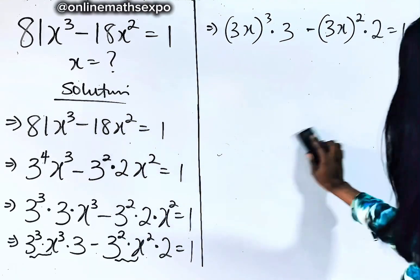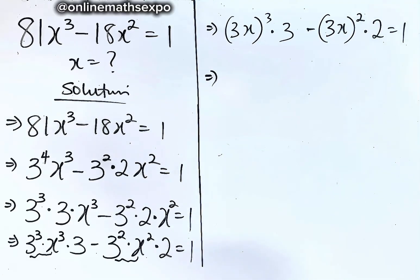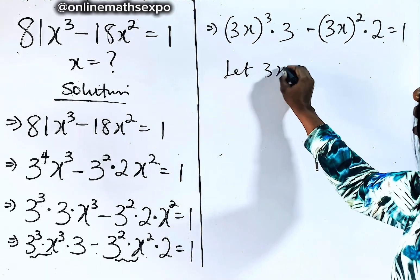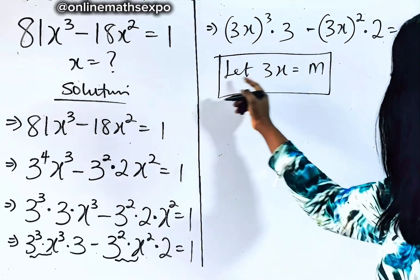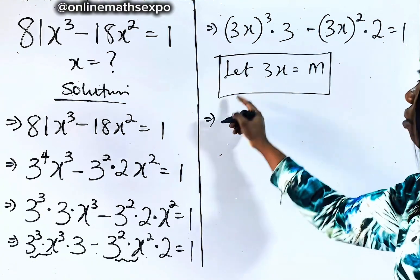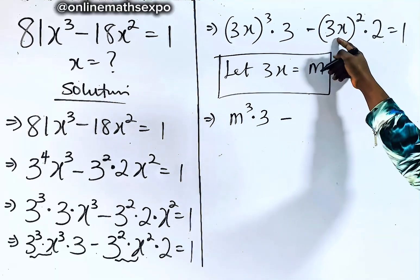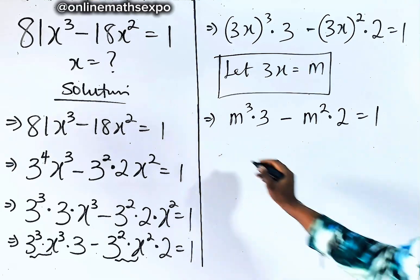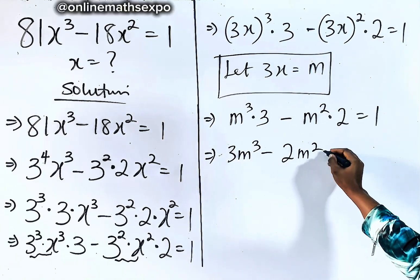So to keep solving this, you observe that 3x is repeated, so you can choose to replace it. So we can say let 3x be equal to m. Now let's replace this here. This will give us m cubed multiplied by 3, minus m squared multiplied by 2, is equal to 1. Multiplying out, this gives us 3m cubed minus 2m squared is equal to 1.